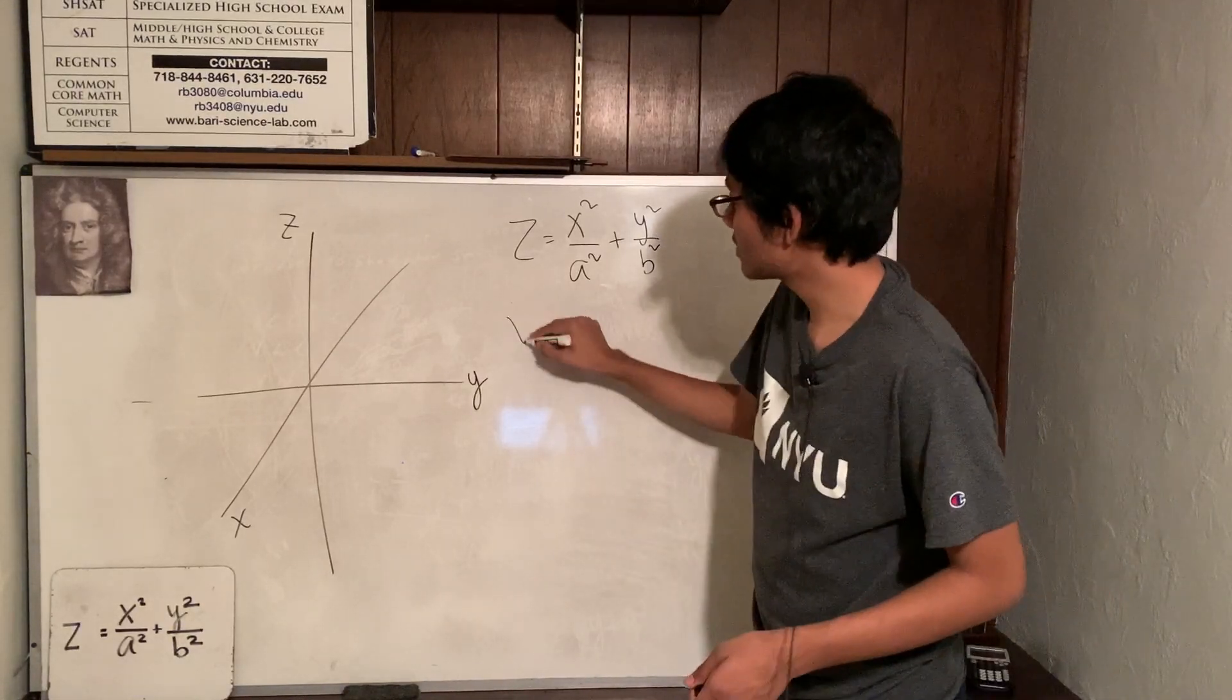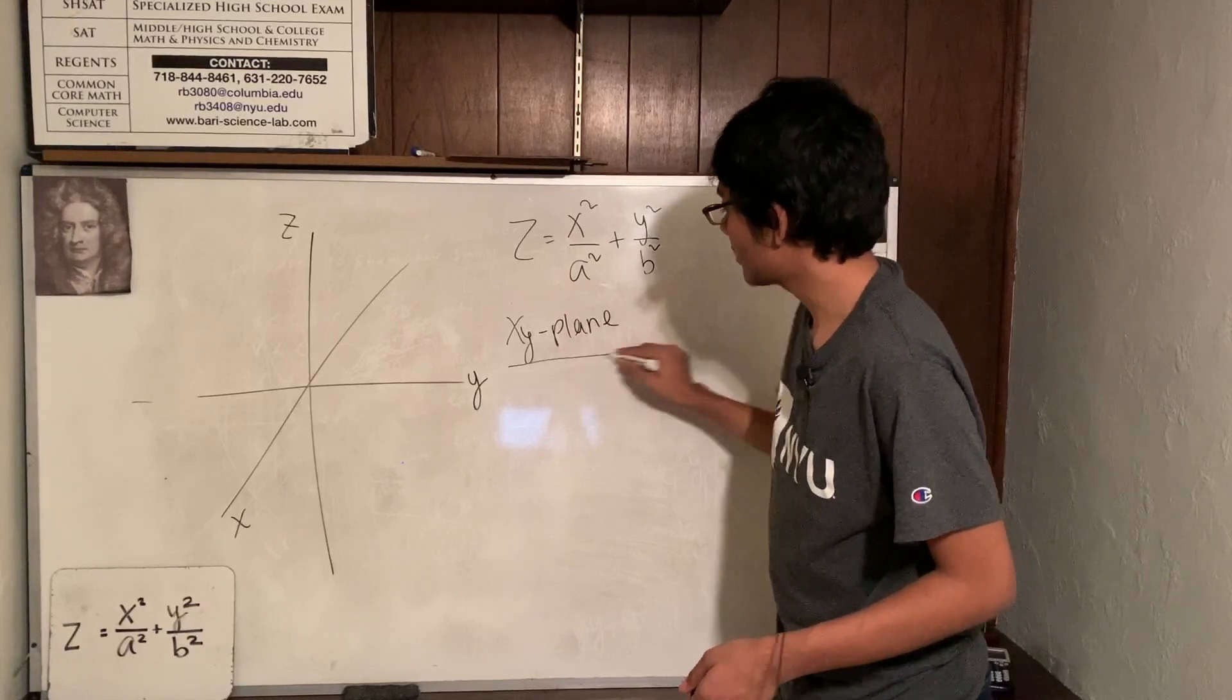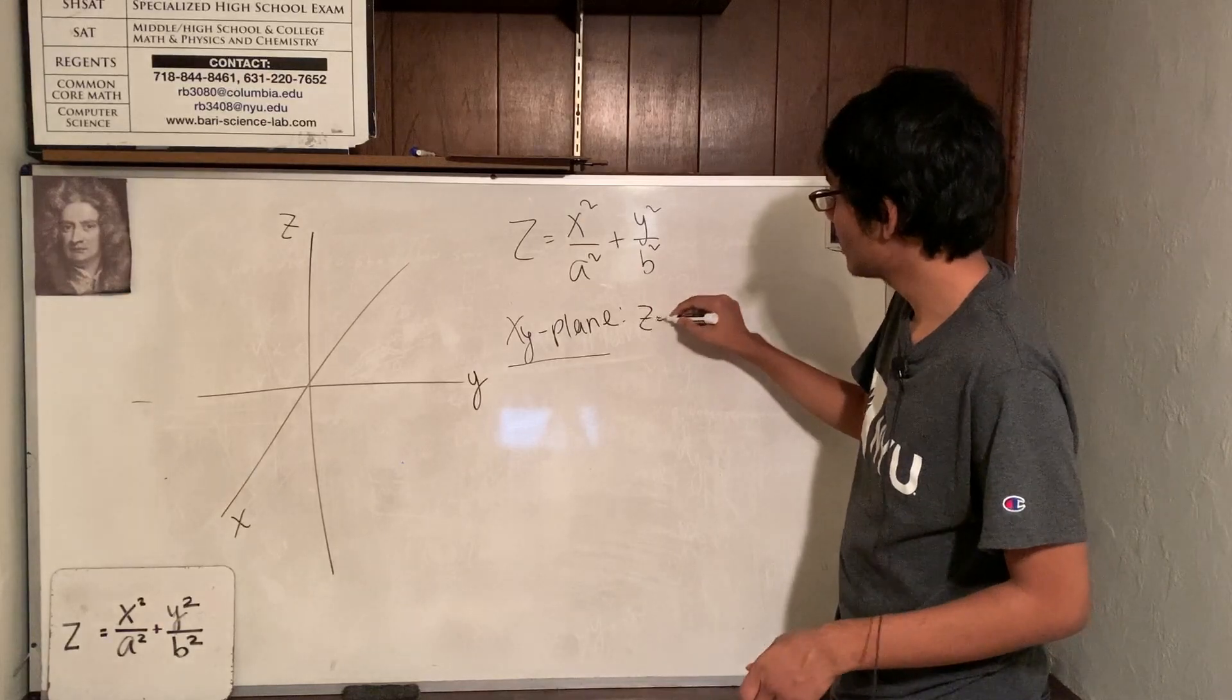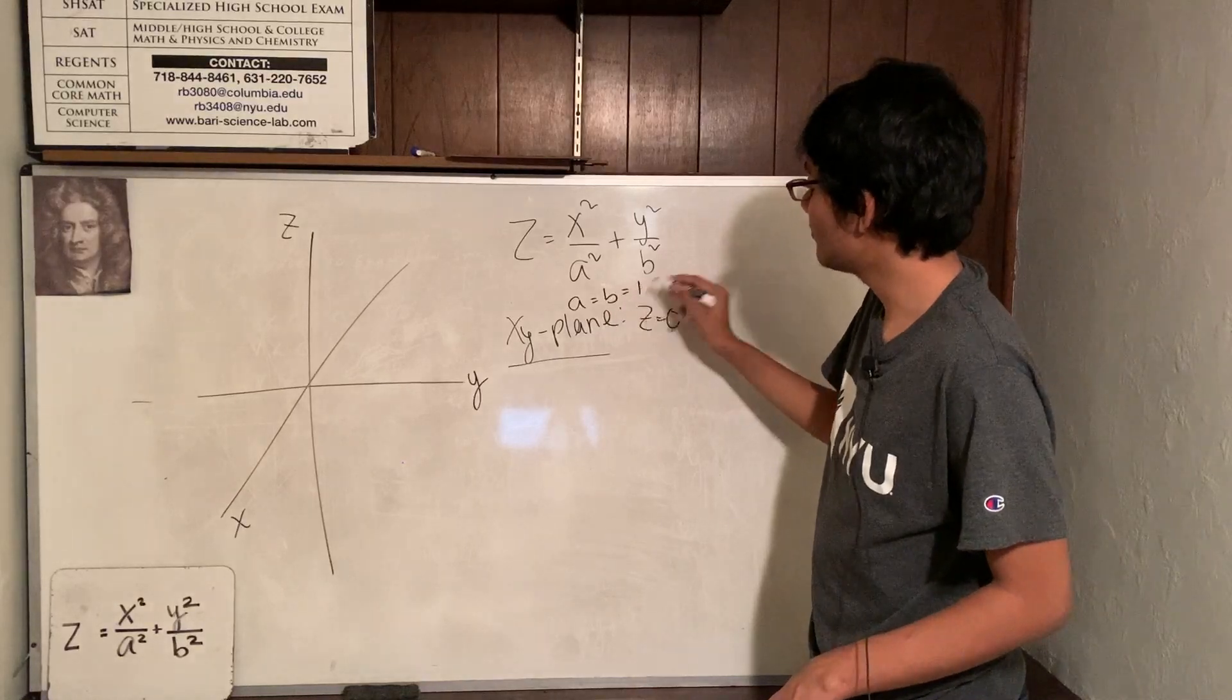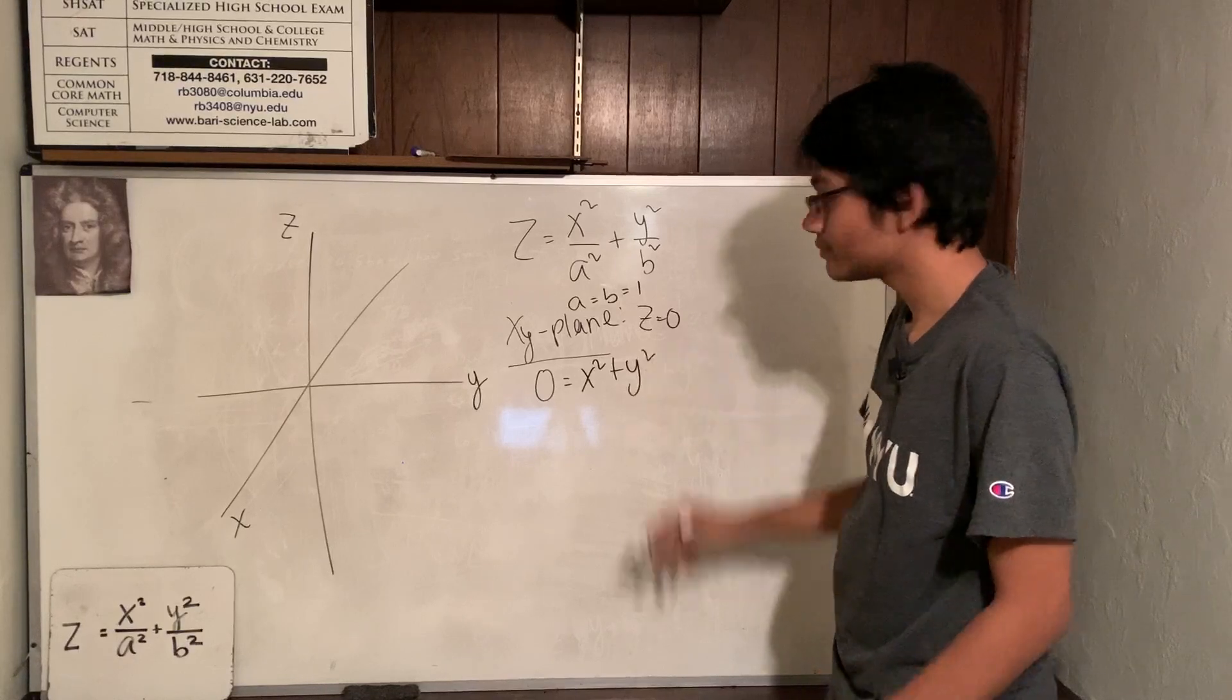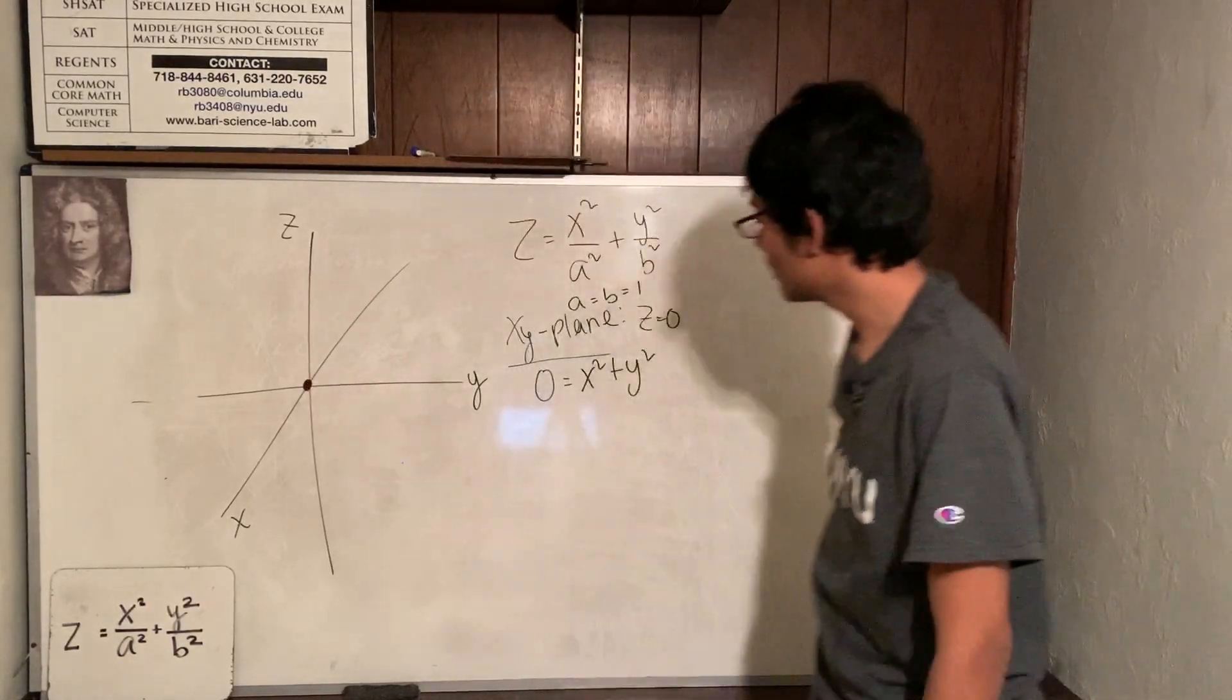Now I want to find the cross section on the xy plane. What do I have to do? I'm going to set my z variable to zero. Take the z term, pop it out, and what am I left with? If I assume a and b are one, I'm left with zero equals x squared plus y squared. And of course, that's just a point.